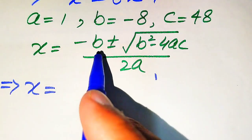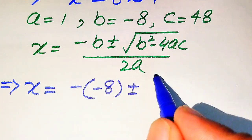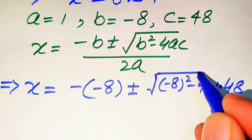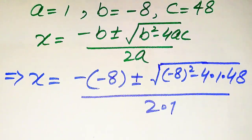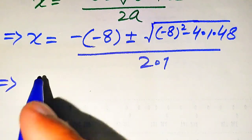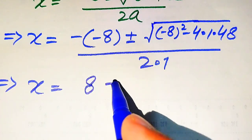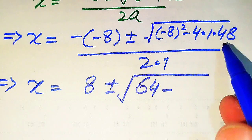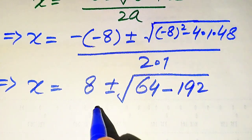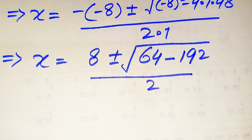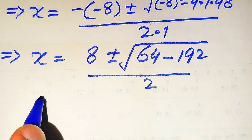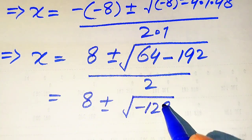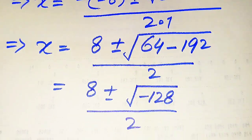After substituting these values, it becomes: minus b, the value of b is minus 8, so minus times minus becomes plus 8, plus minus square root of b squared — minus 8 squared equals to 64 — minus 4 times a which is 1 times c which is 48, so 4 times 48 becomes 192, and it is divided by 2 times a equals to 2. When we subtract these two values we get 8 plus minus square root of 64 minus 192, which is minus 128, divided by 2.